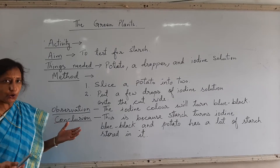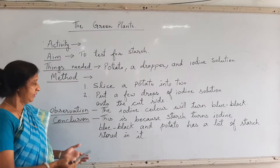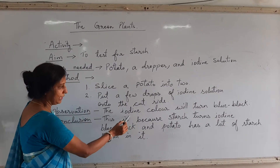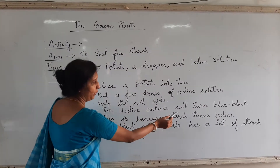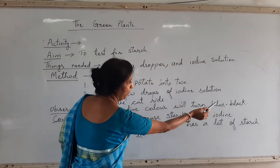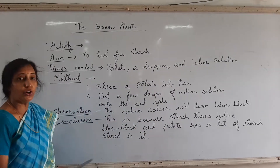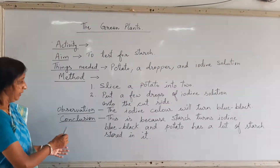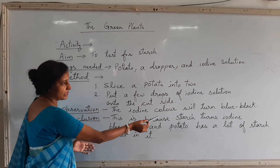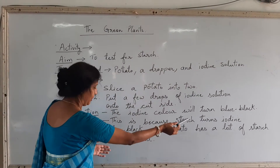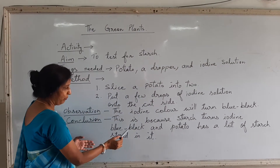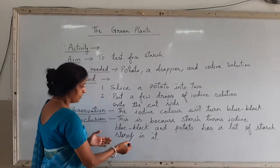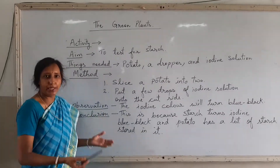What will you observe, children? Let's go with the observation: the iodine color will turn blue-black. What will be the conclusion? This is because starch turns iodine blue-black, and potato has a lot of starch stored in it.